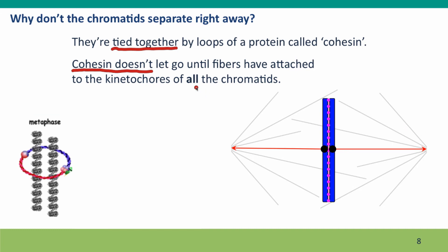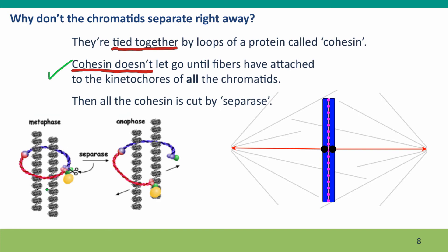Once that checkpoint signal says okay, we can go, then a protein called separase — where cohesin creates cohesion that holds the chromosomes together, separase, indicated here by a little pair of scissors — literally cuts the protein of cohesin, opening up the loops and allowing the chromatids to come apart. Cohesin is cut because all the separase in the cell is activated at once once the checkpoint signal succeeds, and then all the chromatids are allowed to come apart all at once, which is what you'll see if you watch the videos.